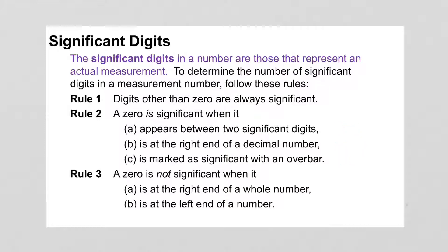A zero is not significant when it's at the right end of a whole number — so in 40, the zero is not significant. Or if it's at the left end of a number, which would be unusual, that zero is also not significant.